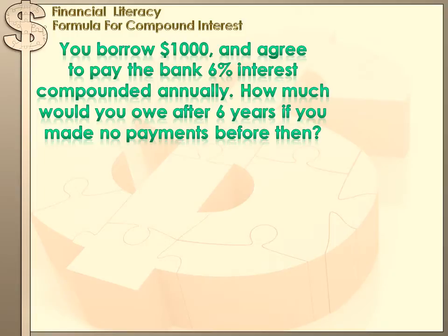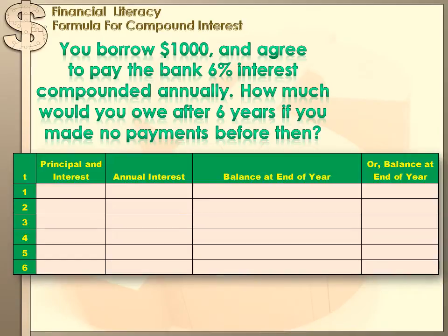We've got to calculate what your balance was at the end of the first year, which would include interest, and then we plug that into the second year, and you'd earn interest on the interest earned in the first year. Let's create a table and go through these calculations. The left column is time, or number of years. The second column is principal and interest — because you're going to earn interest on your interest, your balance at the end of each year will be higher than the beginning. We started out with $1,000 in that account.